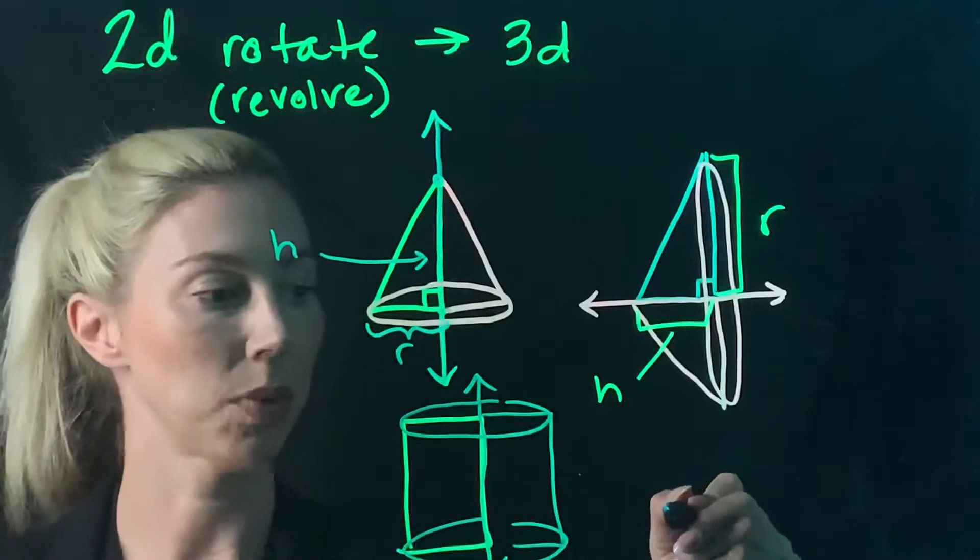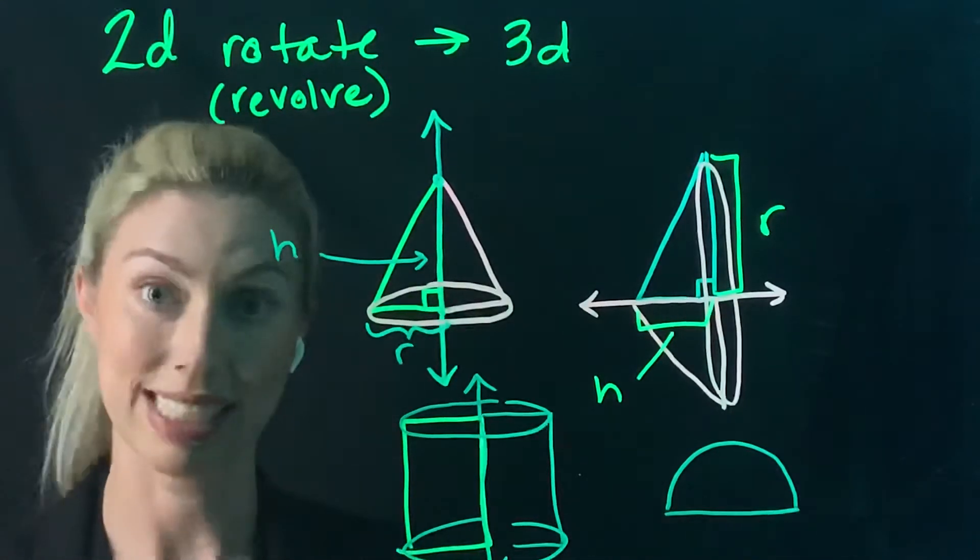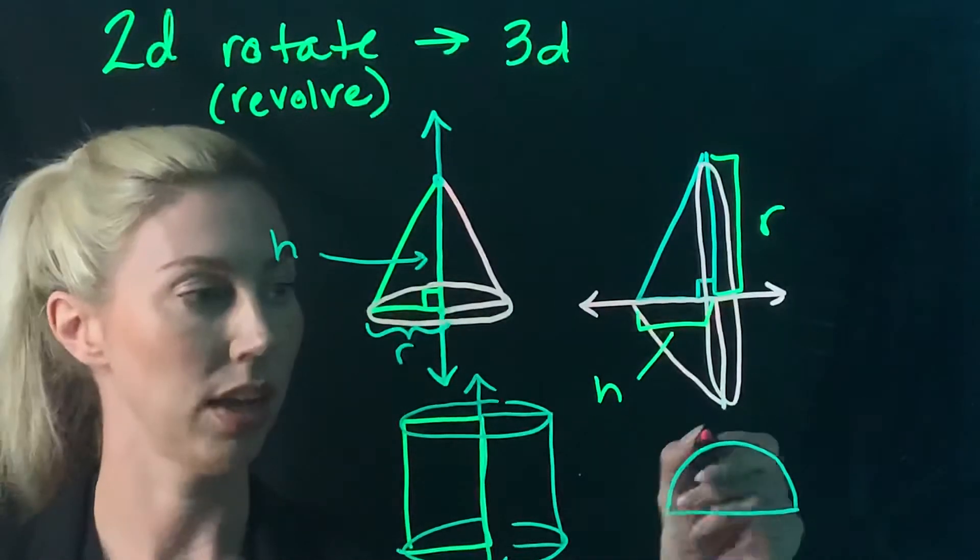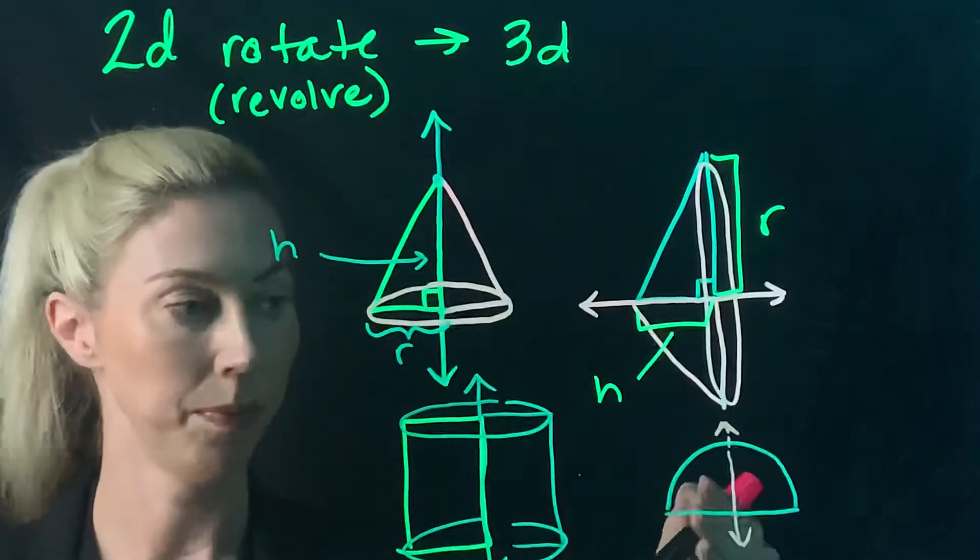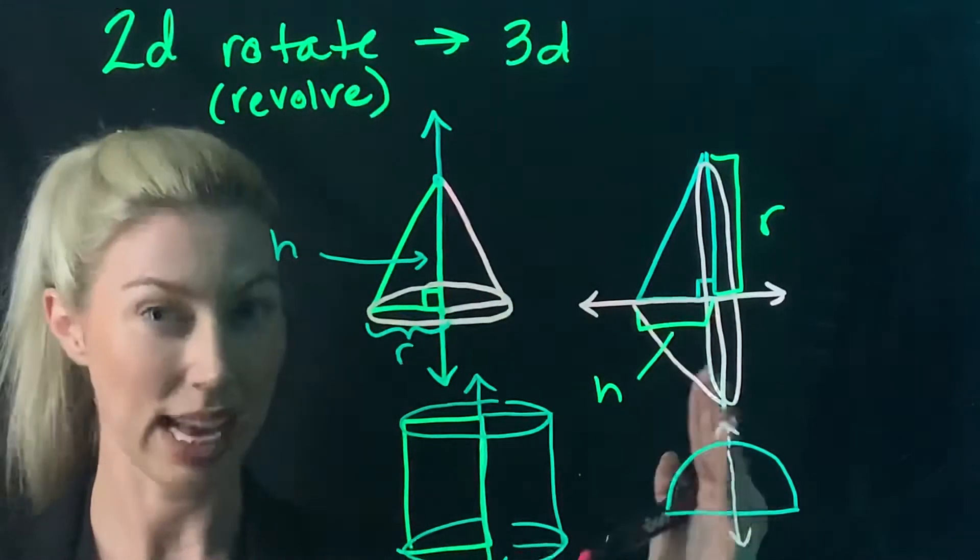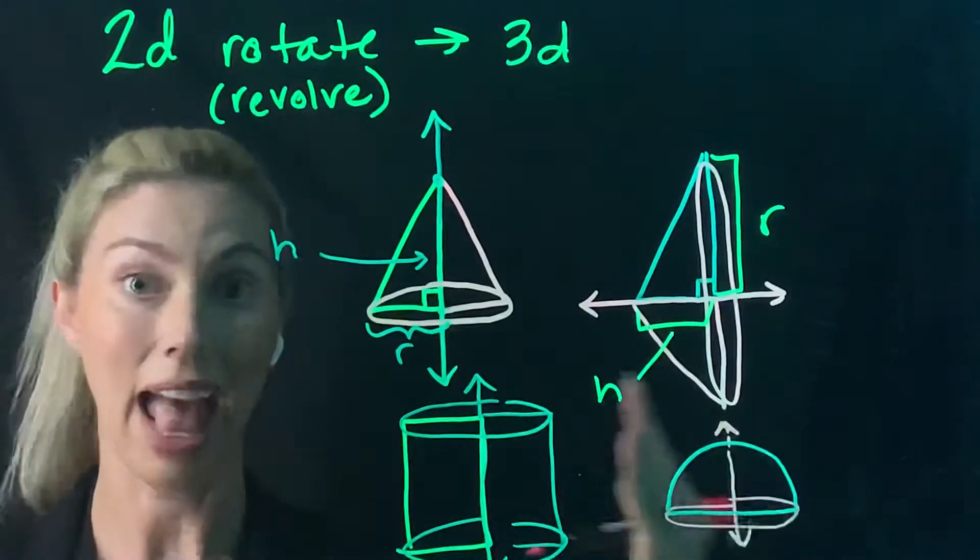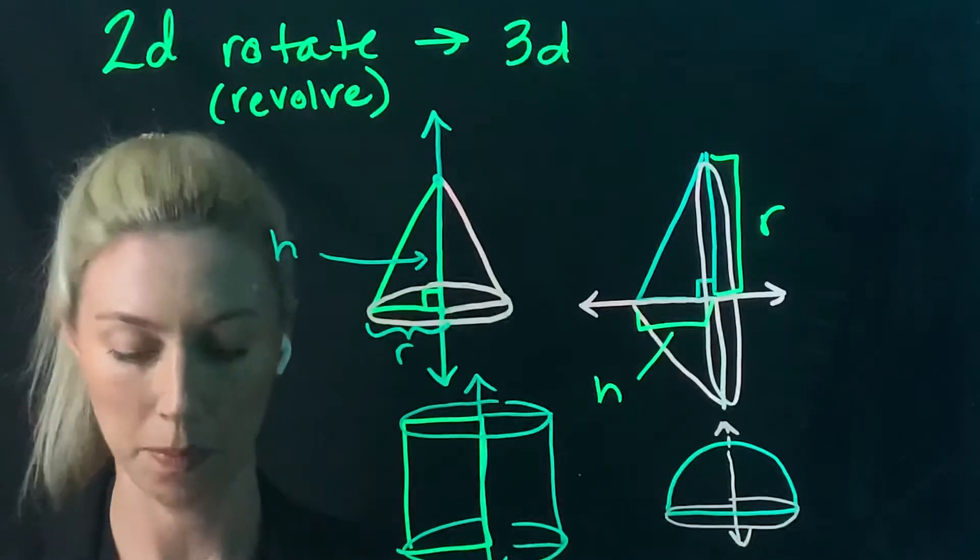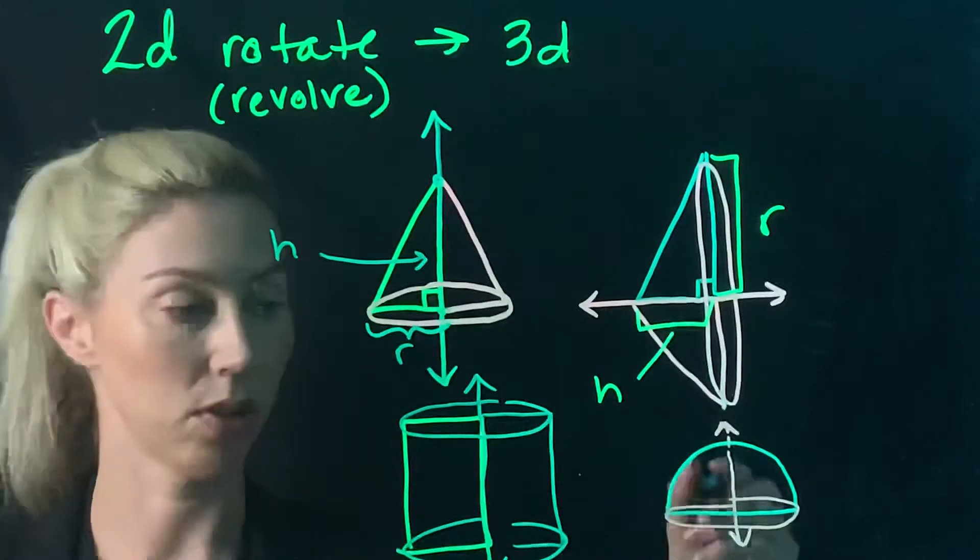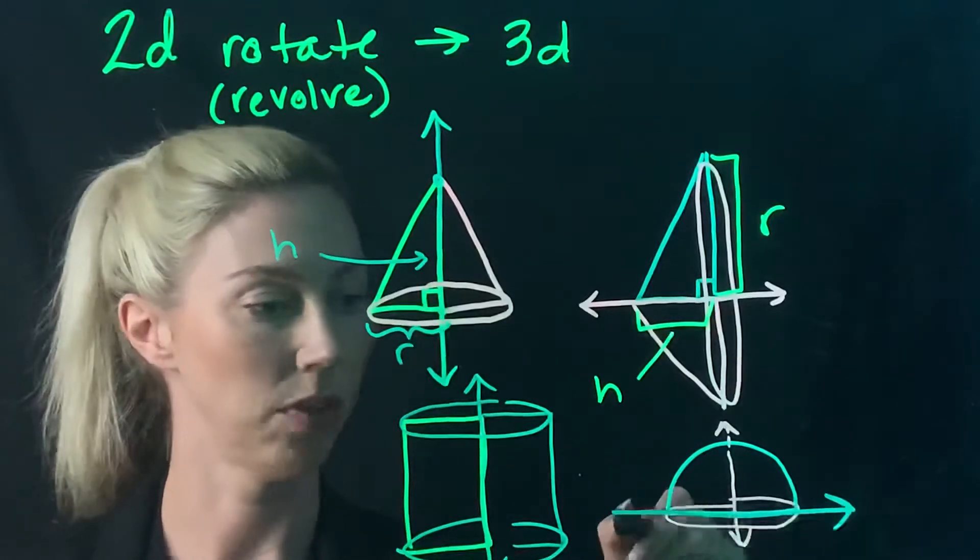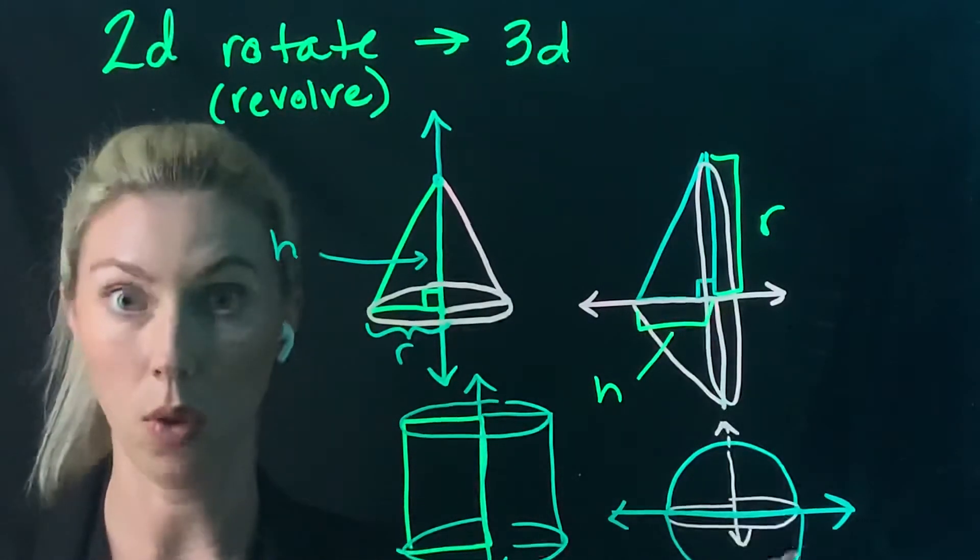Another shape we do revolutions with is a semicircle. If you revolve it around the vertical line in the middle, it has to be perfectly centered, and it will create a hemisphere, or half of a sphere. If it revolves around the horizontal line instead, you'll get a whole sphere.